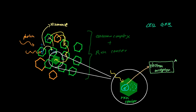At this point, something extremely important happens: when this molecule becomes reduced — when it gains the electrons — at this very moment, electromagnetic energy is transformed into chemical energy. The transfer of energy is now permanent, where our light energy is finally turned into chemical energy.